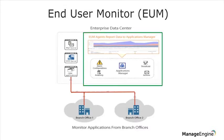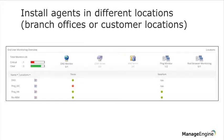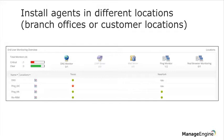End user monitoring can collect data across different locations. In this representation, you can see two agents named Texas and New York, which communicate with their respective servers and applications and then communicate to the parent. The DNS, LDAP, mail, and ping monitors, along with the real browser monitor, are all supported in the end user monitoring agent. If you have any of these five monitors in your setup, end user monitoring will associate with them and instantly start collecting and transmitting data.